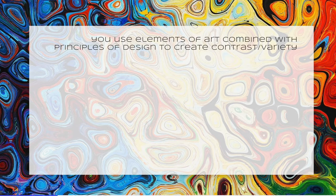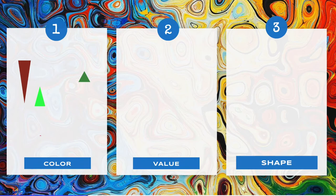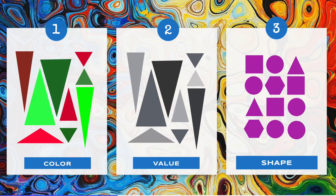You use elements of art combined with principles of design to create contrast and variety. For example, color, value, and shape are only a few of the elements you can use to create contrast and variety in your art.